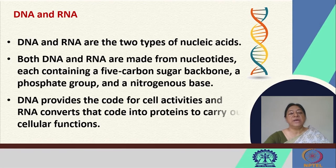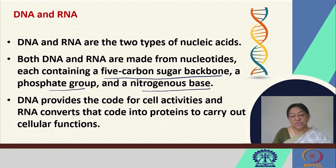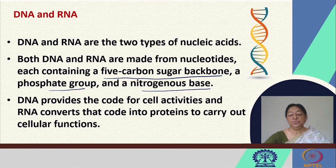These are two types of nucleic acids. Both RNA and DNA are made from nucleotides. The nucleotides contain a five-carbon sugar backbone, a phosphate group, and a nitrogenous base. DNA provides the code for all cell activities and RNA converts that code into proteins to carry out cellular functions — our central dogma of biology from DNA to RNA to protein.